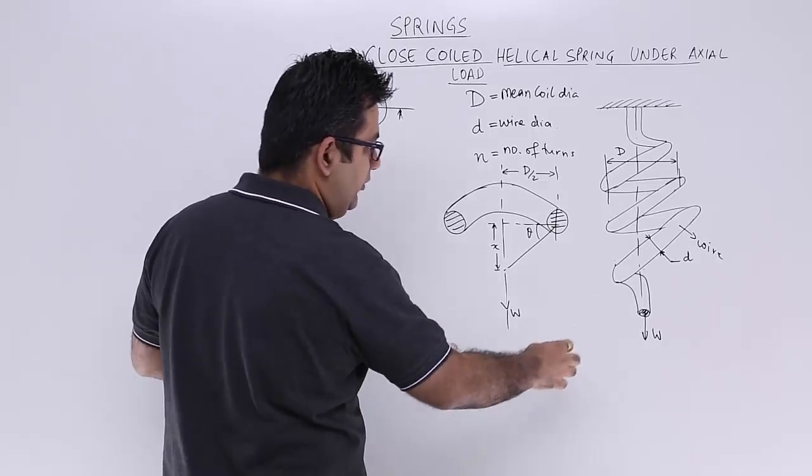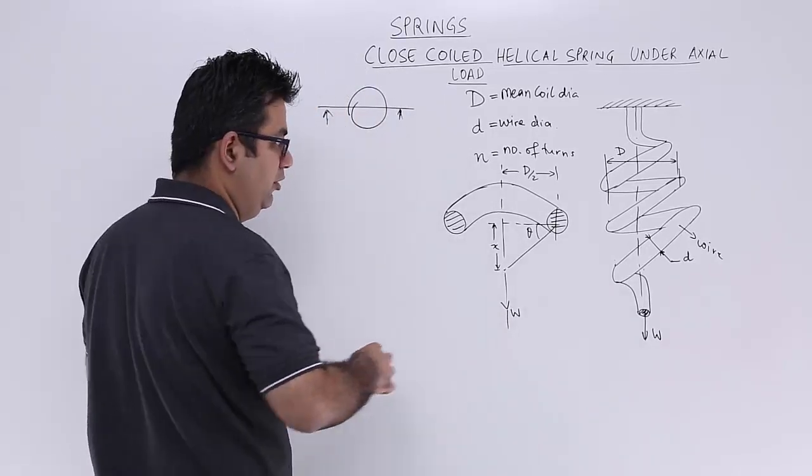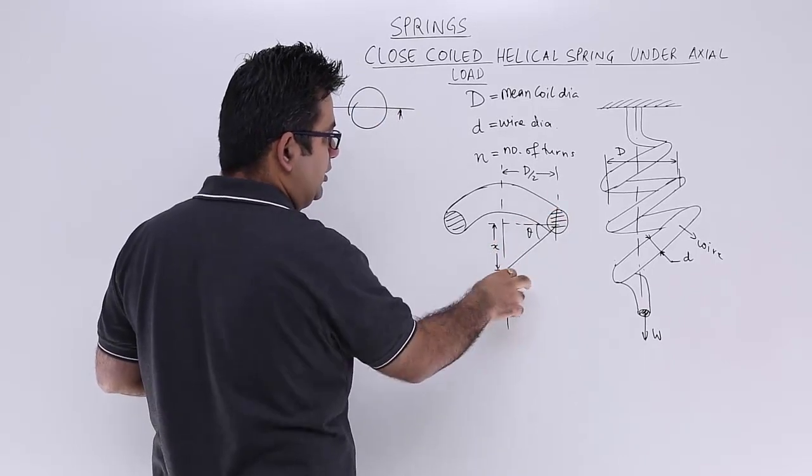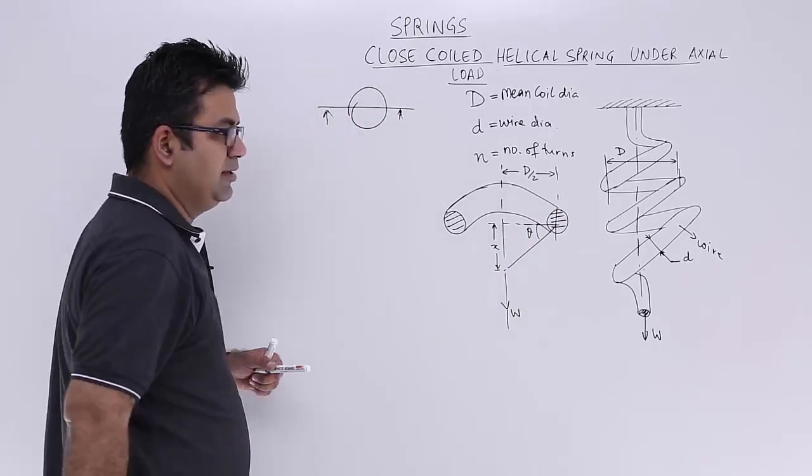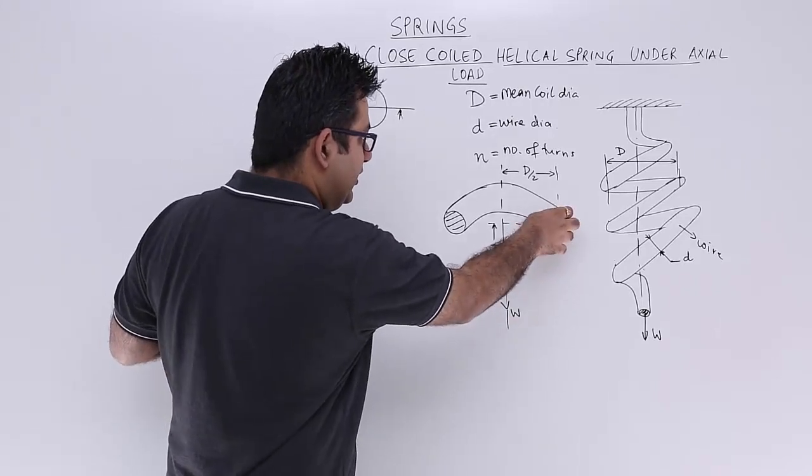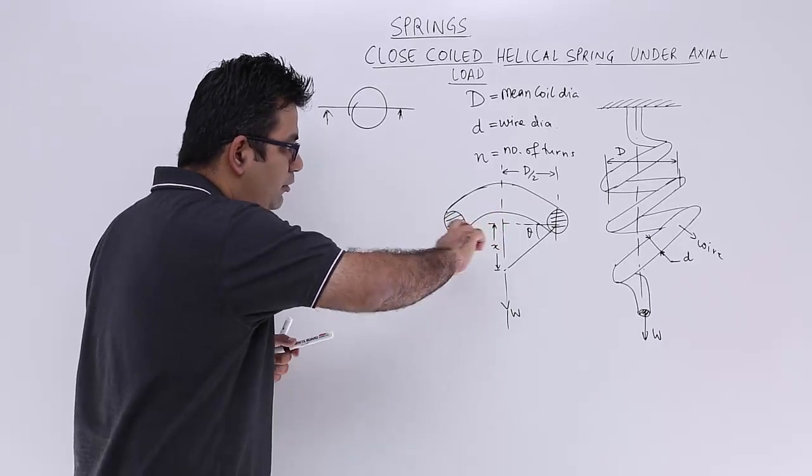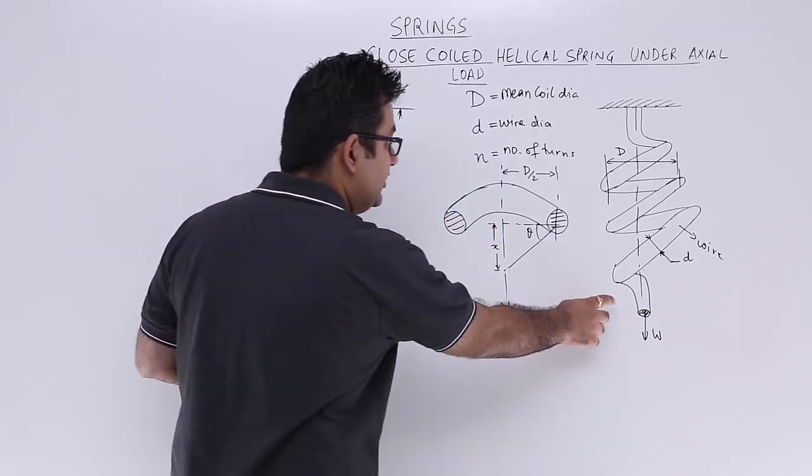So what is happening is, when you pull it down, this cross section, this twists. Twisting is by an angle theta. So this part, it twists and it moves down. So this is the kind of twisting that is taking place in this wire.